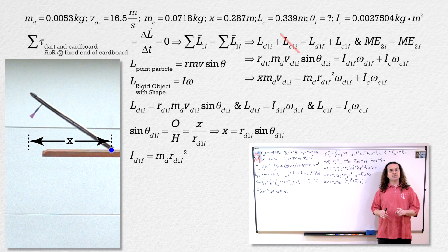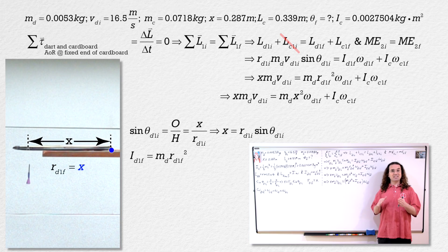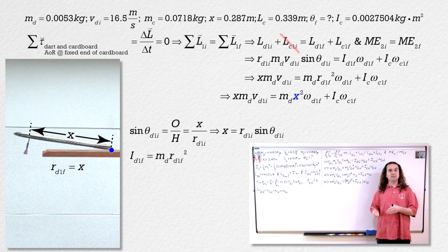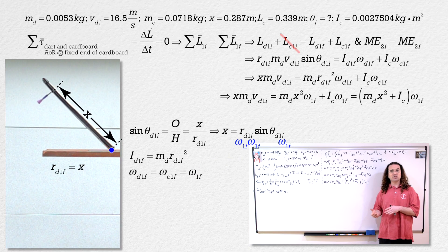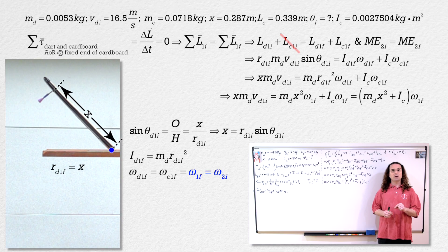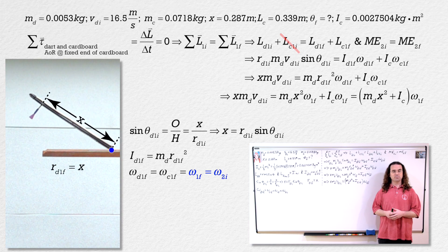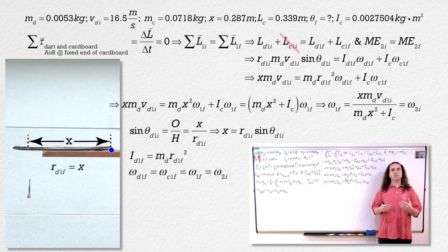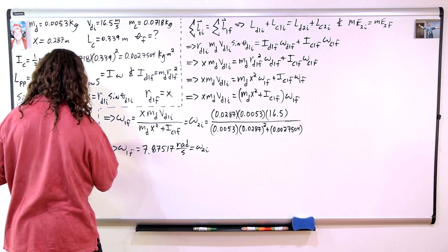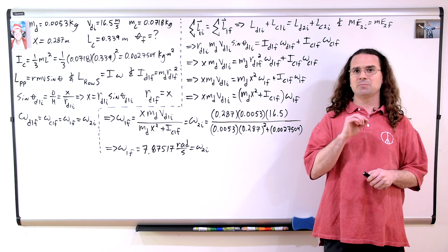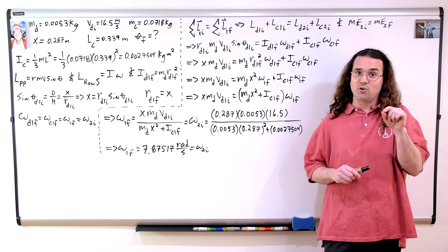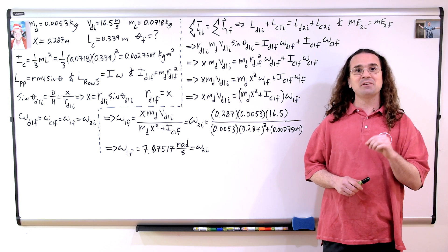Also notice that r for the dart for part one final equals x, because after the collision the dart is still a distance x from the axis of rotation. Both angular velocities for part one final are the same — the dart and cardboard have the same angular velocity after the collision because they are moving together. The final angular velocity for part one is also the initial angular velocity for part two. With numbers, that works out to 0.287 times 0.0053 times 16.5, all divided by the quantity 0.0053 times 0.287 squared plus 0.0027504, which equals 7.875 radians per second.